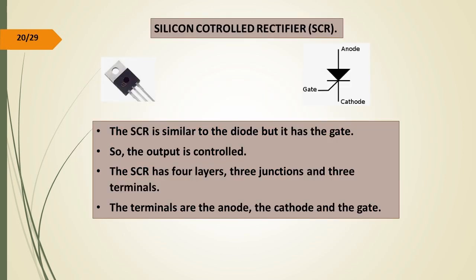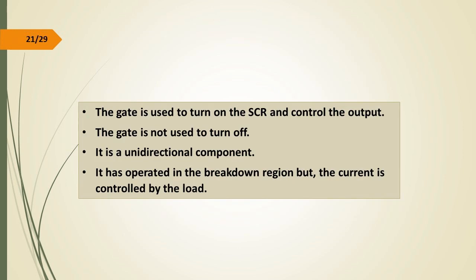SCR — Silicon Controlled Rectifier. The SCR is similar to the diode but it has a gate, and its output is controllable. The SCR has four layers, three junctions, and three terminals: the anode, the cathode, and the gate. The gate is used to turn on the SCR and control the output, but it is not used to turn off. It is a unidirectional component.